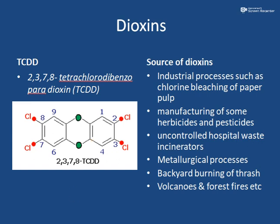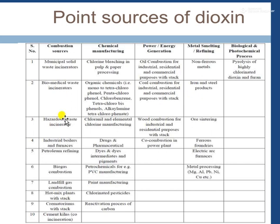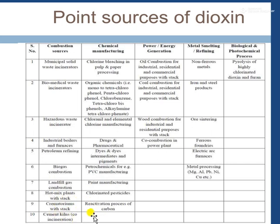It is always wise not to be close when burning. Some other point sources of dioxins include municipal solid waste incinerators, biomedical waste incinerators, hazardous waste incinerators, industrial boilers and furnaces, biogas and landfill gas compression, hot mix plants with stacks, crematoria with stacks, and cement kilns — all of these liberate dioxins.